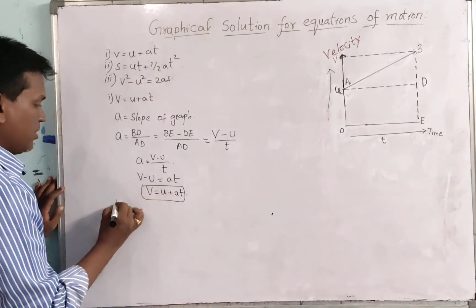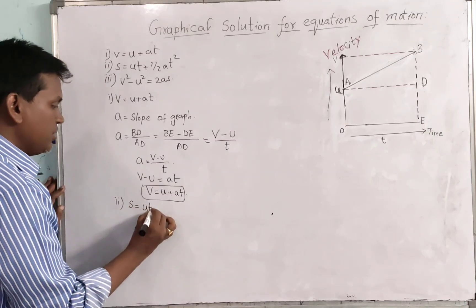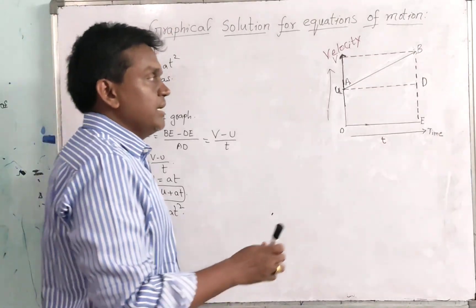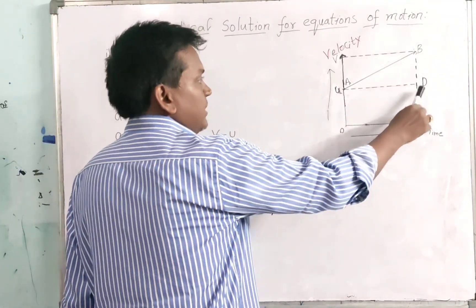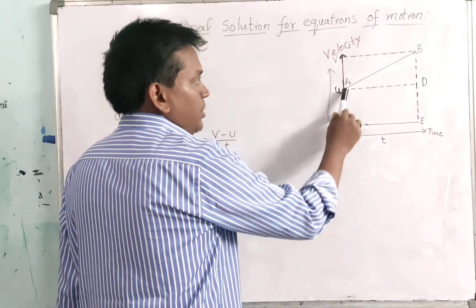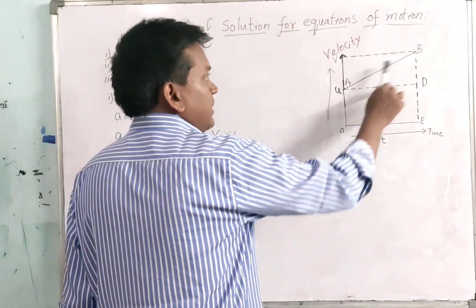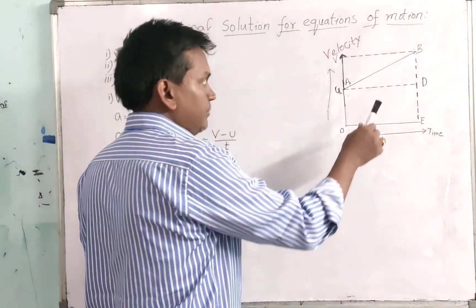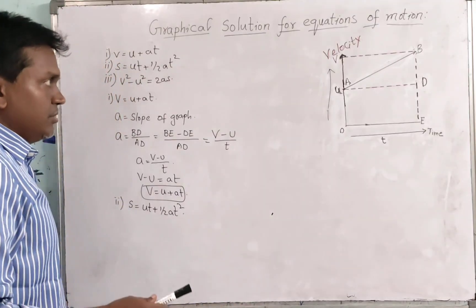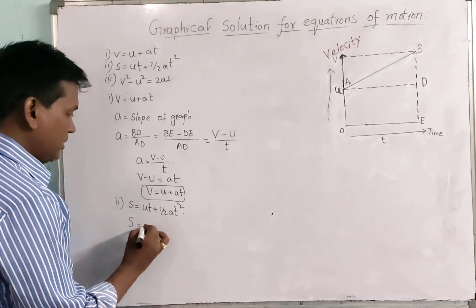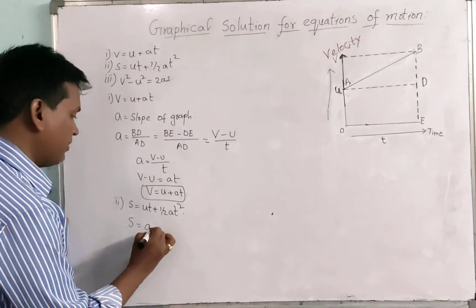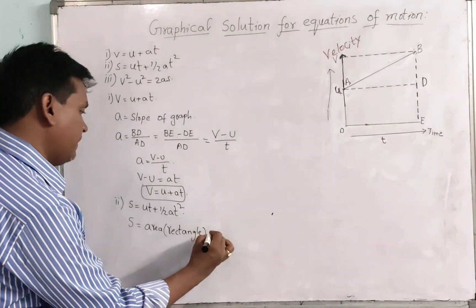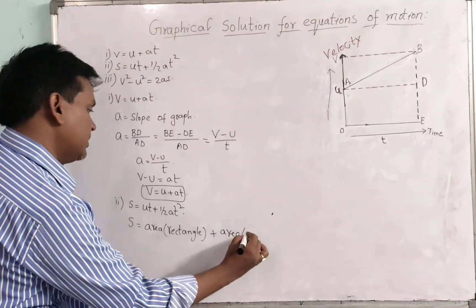Rearranging, V - U = AT, therefore V = U + AT. This is our first equation. Now coming to the second equation, S = UT + ½AT². Looking at the graph, OADE is a rectangle and ABD is a triangle. We find displacement S using these areas.